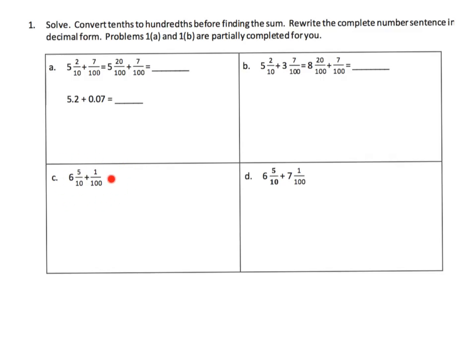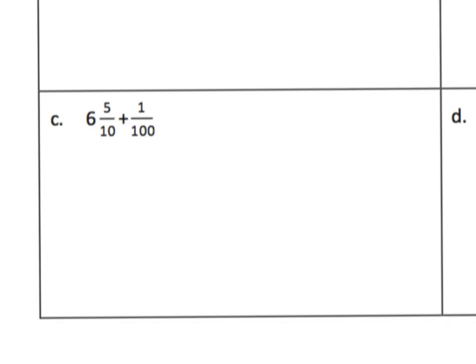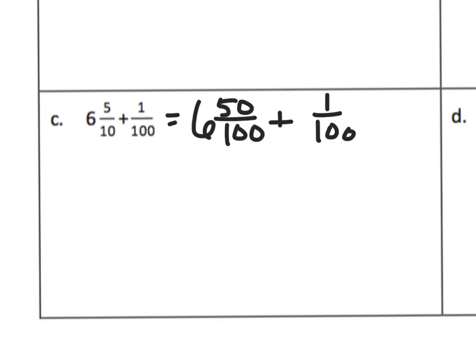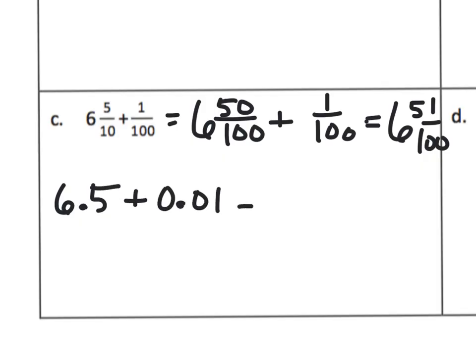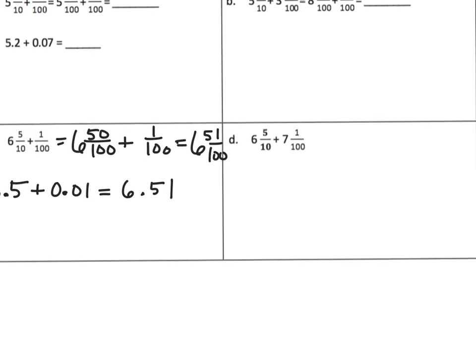What we've got here are fractions already in tenths and hundredths, and we're going to find a common denominator. Zooming in, we take six and five tenths and change that to six and fifty hundredths plus one hundredth. Adding those together gives us six and fifty-one hundredths. Then we want students to write that as a decimal: six point five plus zero point zero one equals six point five one.